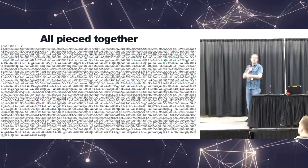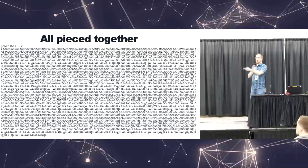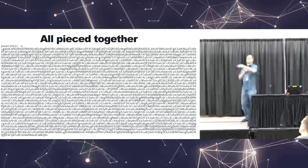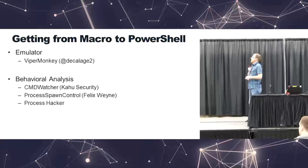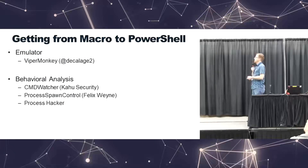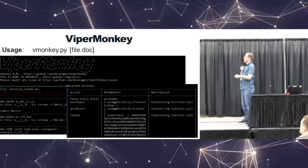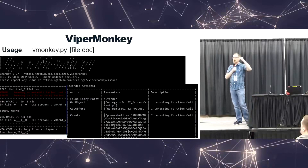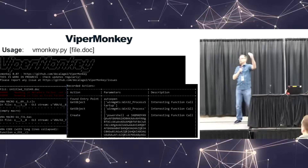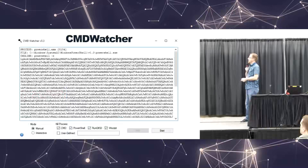Once assembled, it looks like: PowerShell -E followed by a big long base64 string. The question is how to get that assembled output without running it. There are several tools to help. To go from the macro to the PowerShell command, you can use Viper Monkey, or behavior-analysis tools like Command Watcher from Cognitio Security, Process Spawn Control, and Process Hacker. Starting with Viper Monkey — another very simple tool — just point it at the document and let it fly. It's an emulator; it doesn't actually enable content or trigger anything. It analyzes all the VBA code and spits out the PowerShell -E command with all the base64 at the end.